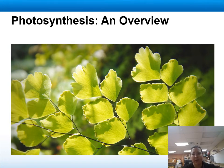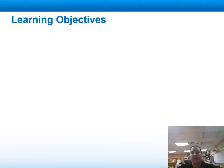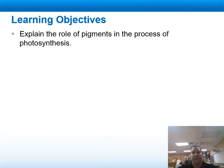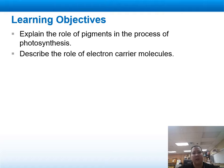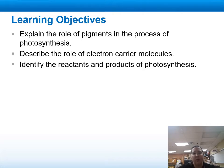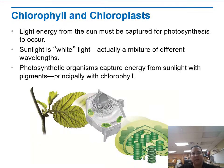Welcome to Unit 3, Lecture 3: Photosynthesis, an Overview. Learning Objectives: Explain the role of pigments in the process of photosynthesis. Describe the role of electron carrier molecules. Identify the reactants and products of photosynthesis.